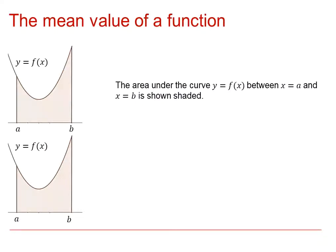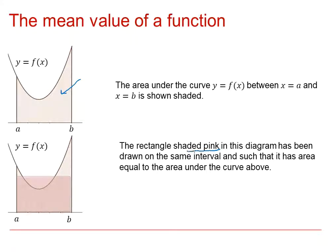Here we have a graph of a function f(x) where the area has been defined between x = a and x = b. The pink shaded rectangle has been added to the diagram, drawn on the same interval such that it has area equal to the area underneath the original function. It's like taking the area underneath this function and pouring it into a container to see how deep it will be. It's this depth, or the mean of that function, that we are calculating.